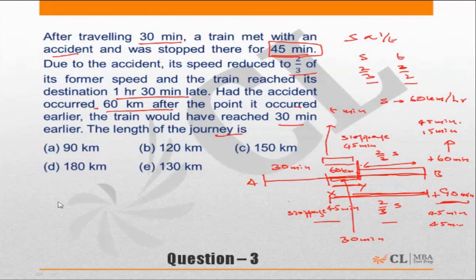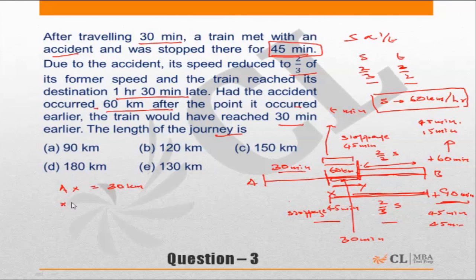From A to X, the distance was covered at 60 km/h for 30 minutes, so AX equals 30 kilometers. XY is given as 60 kilometers. Now we need to find YB. The delay over YB due to reduced speed is 15 minutes. Recalling that the delay equals the normal time divided by 2, the normal time for YB would be 30 minutes.